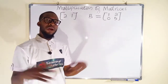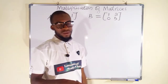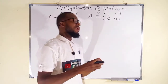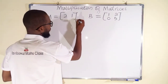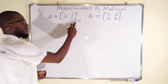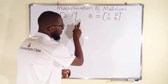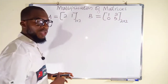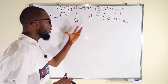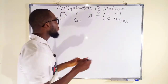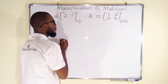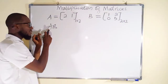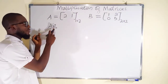The order of matrices matters when it comes to multiplication because it is not always that you can multiply two matrices together. The order of matrix A is 1 by 2, meaning it has one row and two columns, while matrix B is 2 by 2 because it has two rows and two columns. To check for compatibility, consider the columns from the first matrix and the rows from the second matrix.